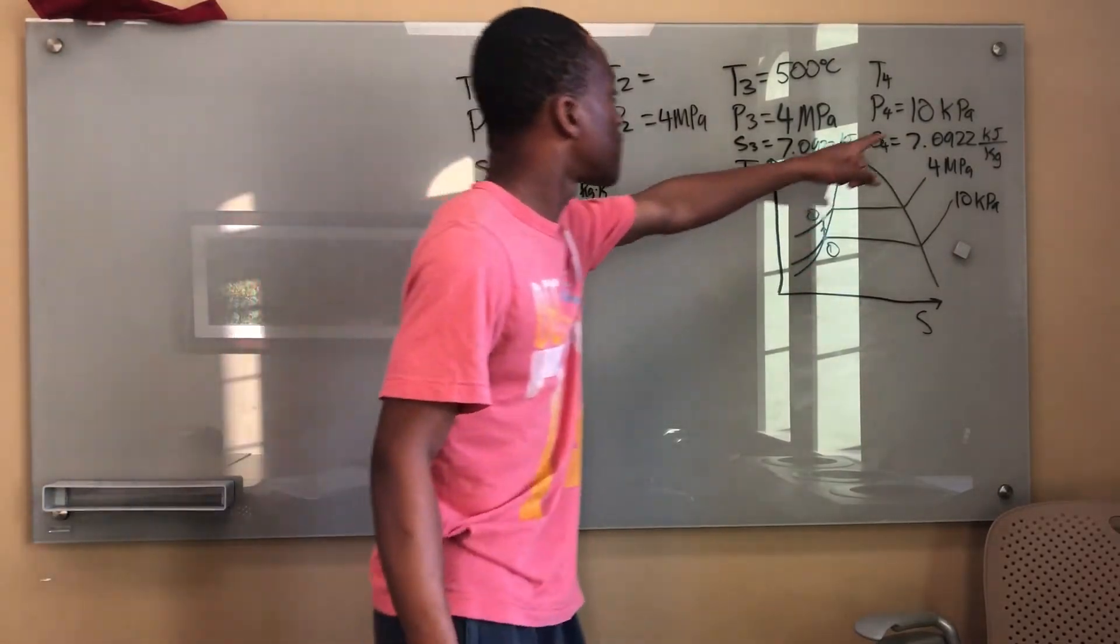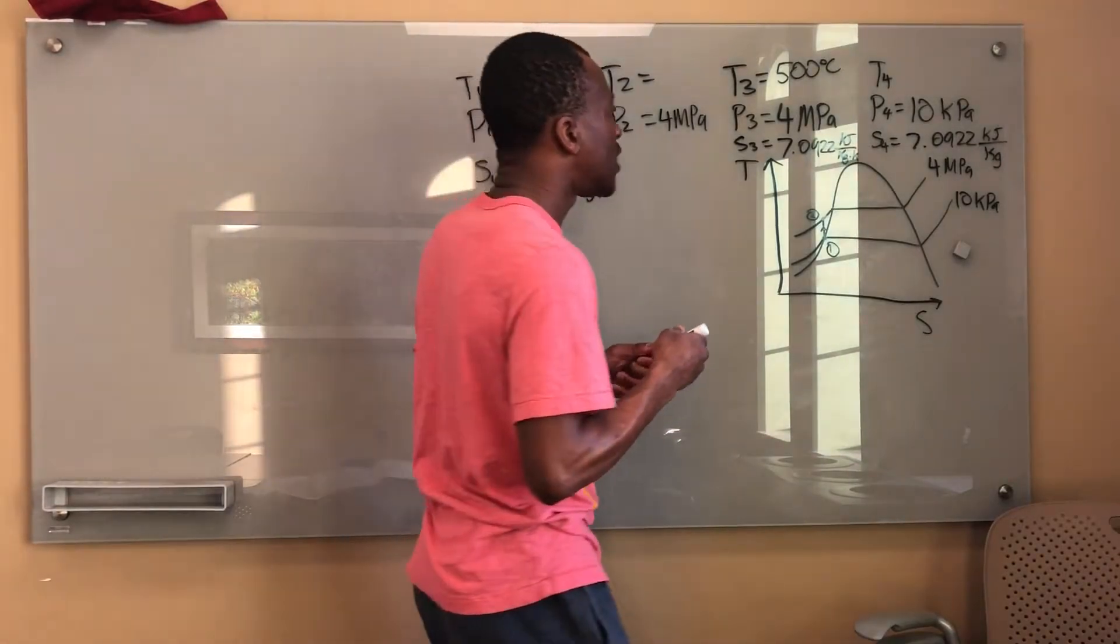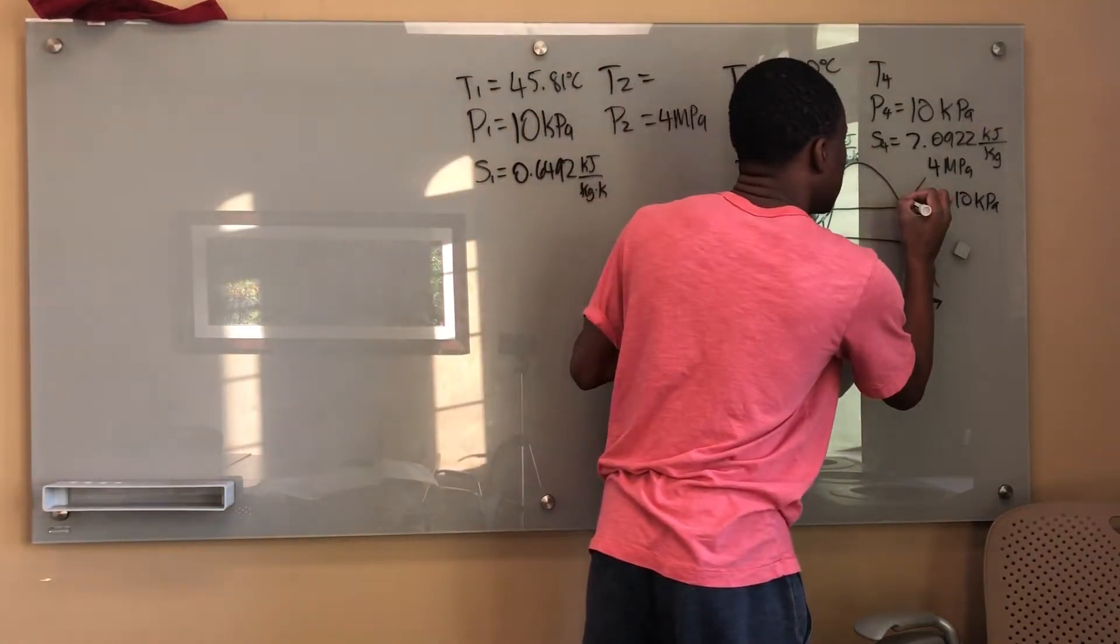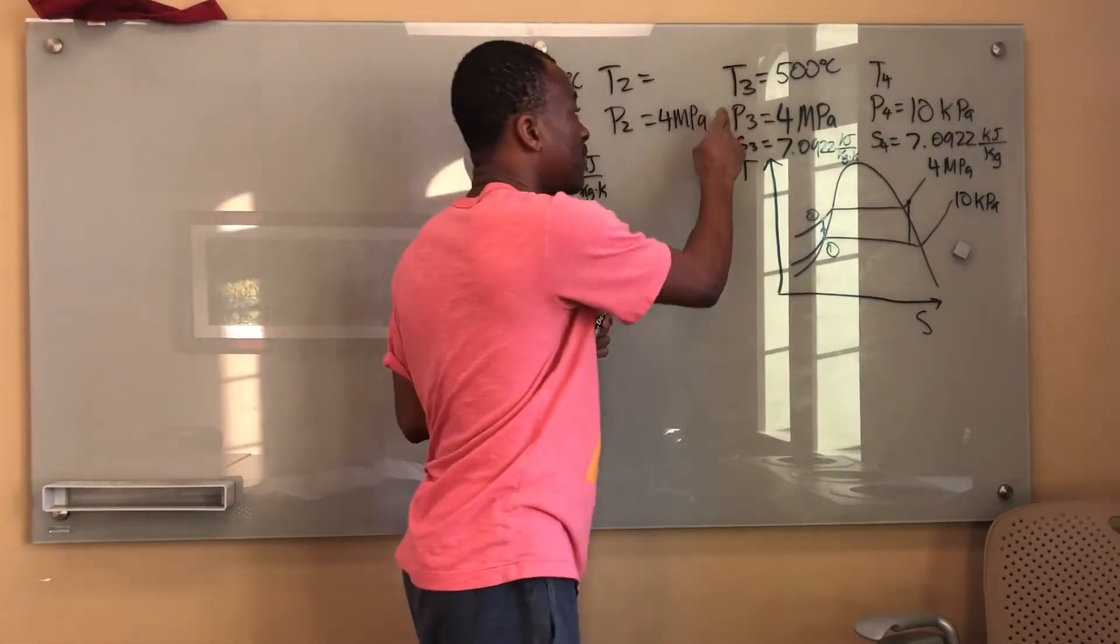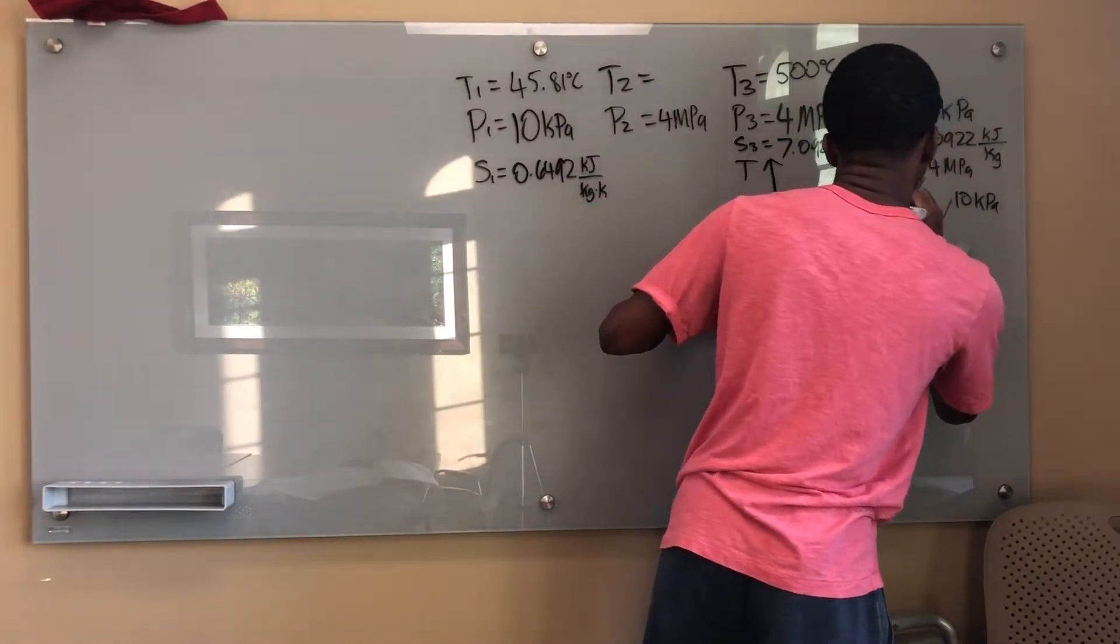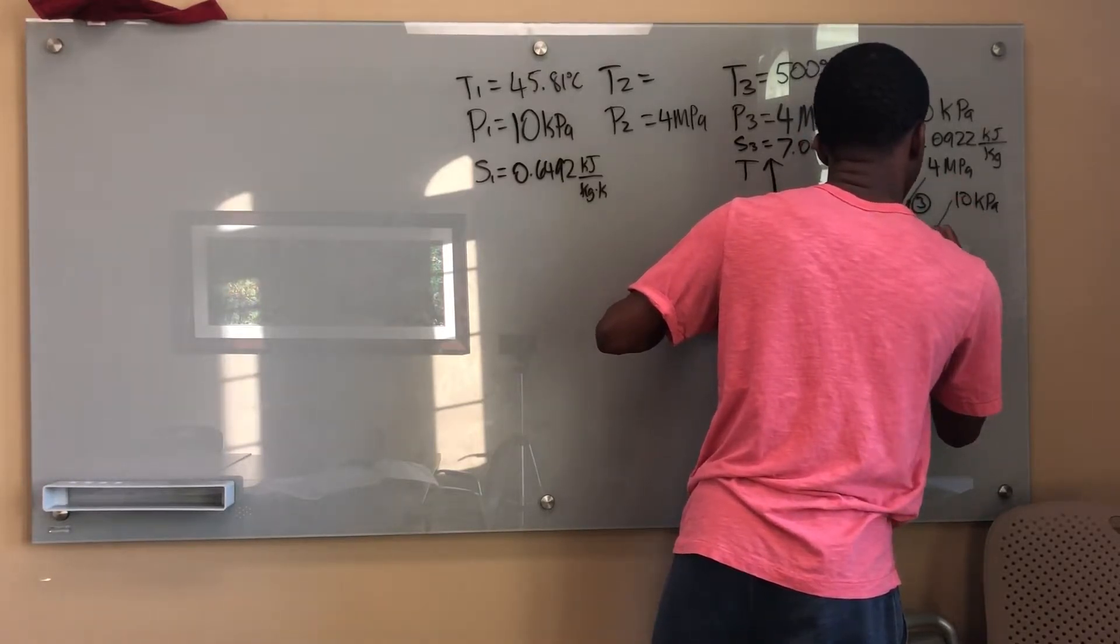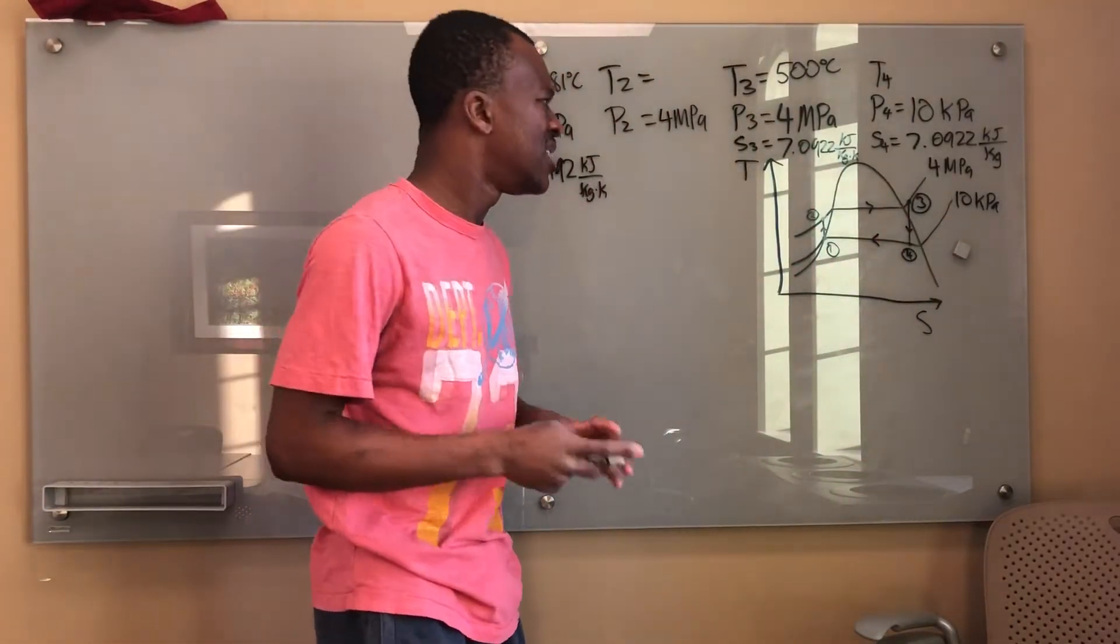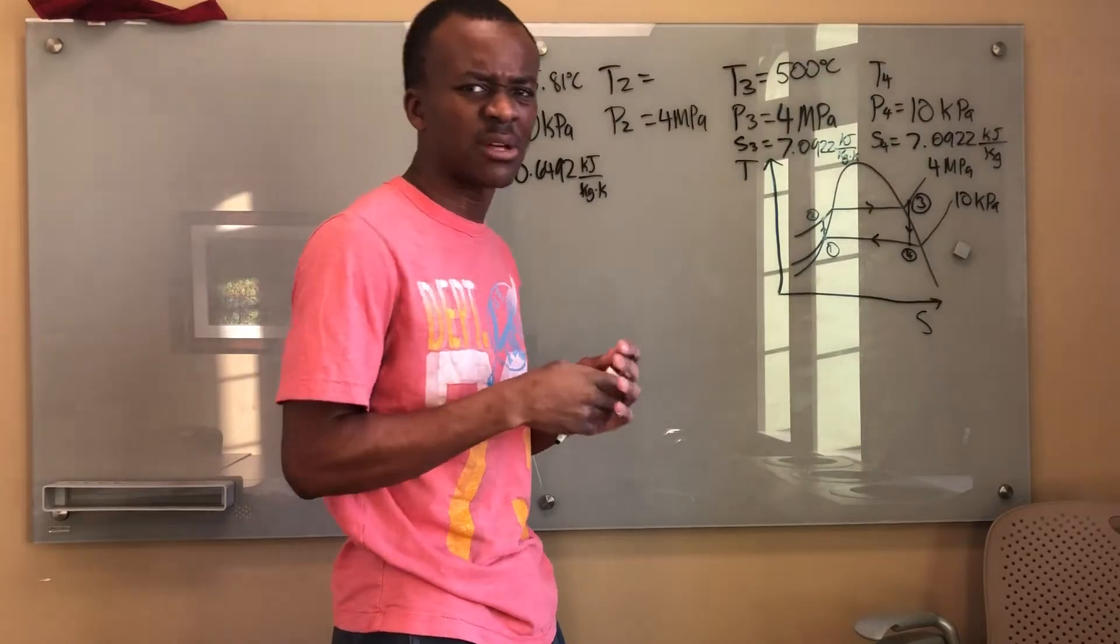Now I have 10 kilopascals here. I know that point 3 is superheated because I just found it in a superheated table. If you want to double check, you can check the saturation temperature at 4 megapascals; it's definitely going to be lower than this. I know that this comes straight down and this is going to be my point 4. So I know that my quality is probably going to be somewhere near 1, maybe 0.8 and higher. Just based on the graph, my quality is probably going to be somewhere close to 1.